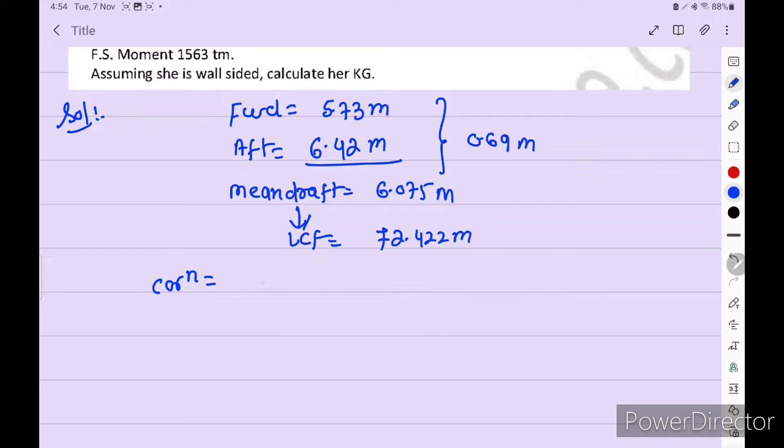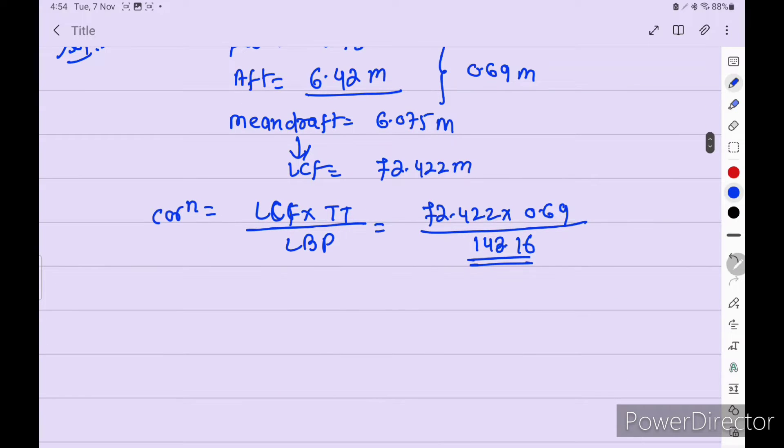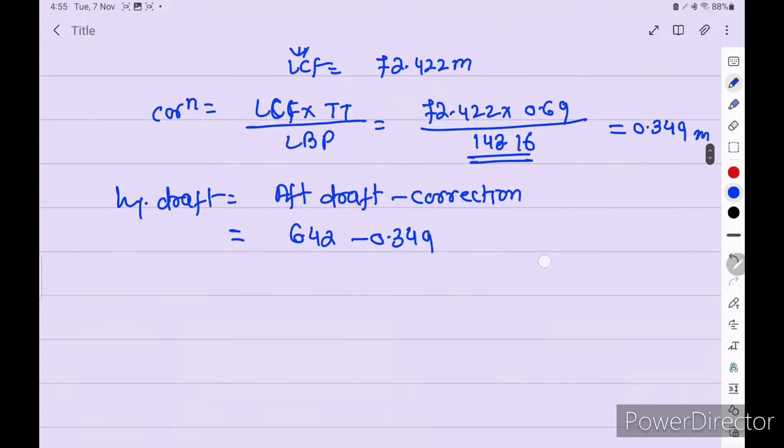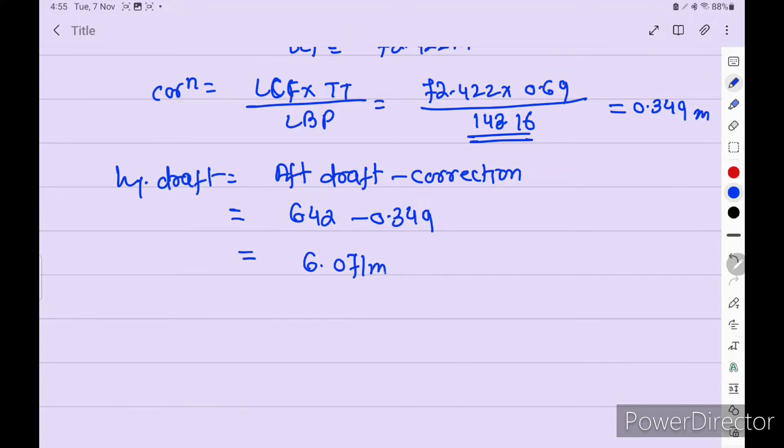Now correction is equal to LCF into total trim divided by LBP. So LCF is 72.422 into 0.69 divided by 143.16. This is MV Handship particular is fixed. 143.1. So we get 0.349 meter. So hydrostatic draft is equal to aft draft minus correction.